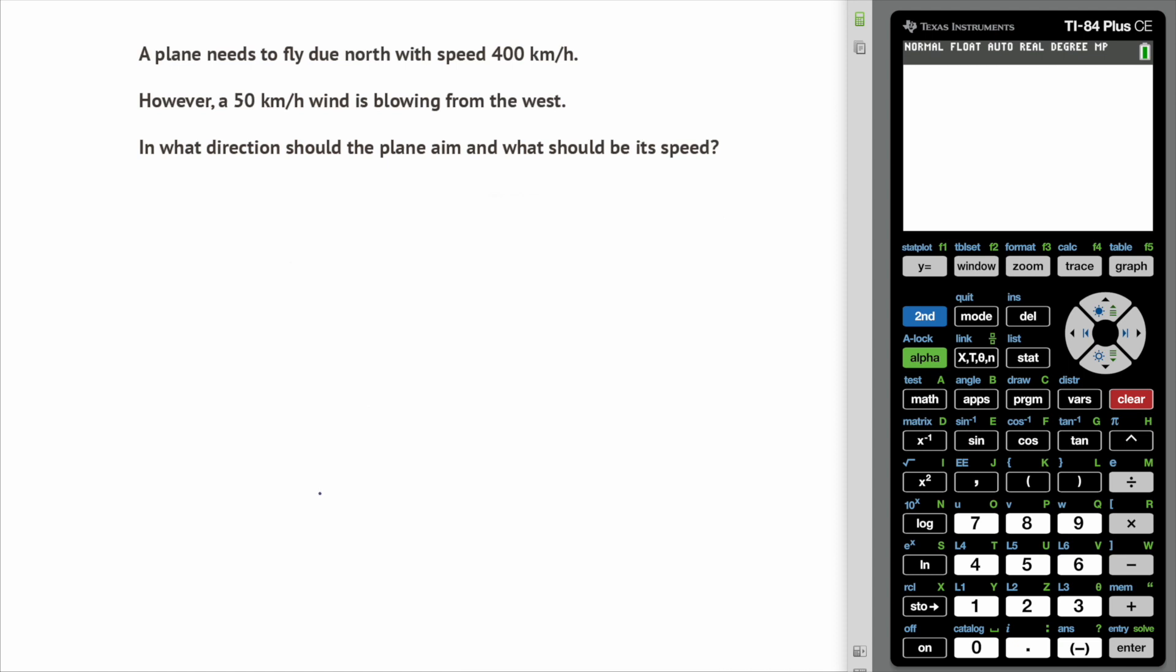So normally this plane would be flying due north with a speed of 400 kilometers per hour. However we've got a wind blowing from the west in this direction here with a speed of 50 kilometers per hour. So the plane needs to aim in this direction here and what we need to find is this angle and also this magnitude. Now what we've got here is a right angled triangle.